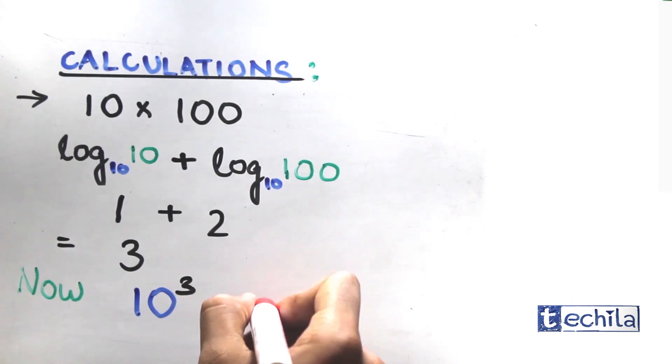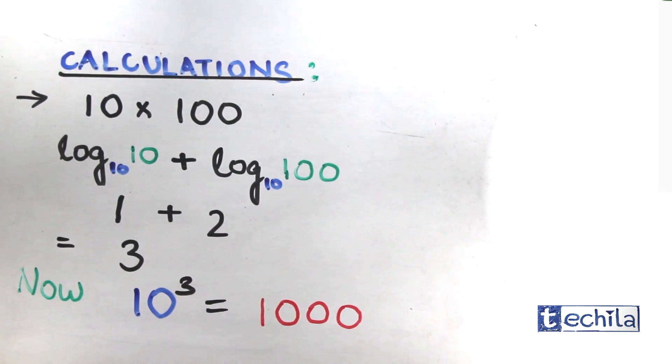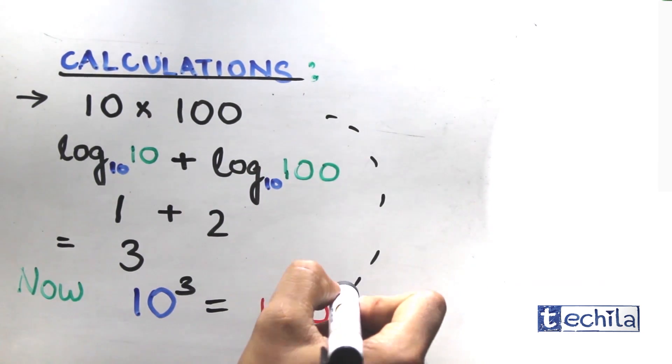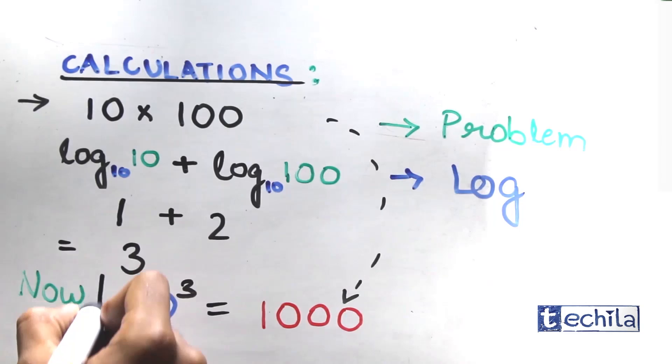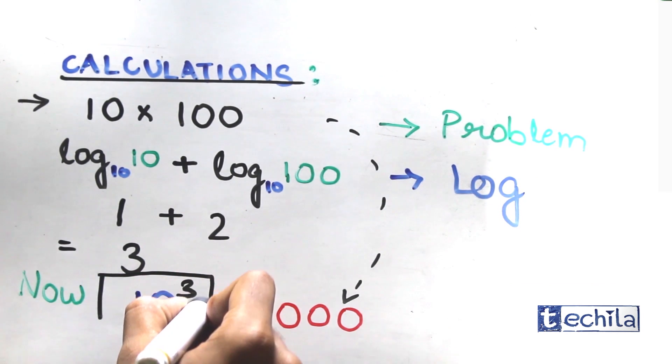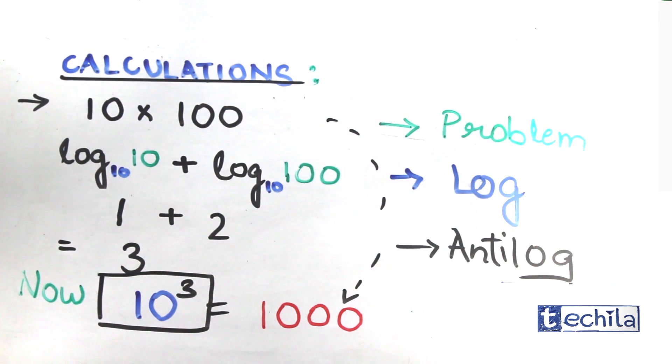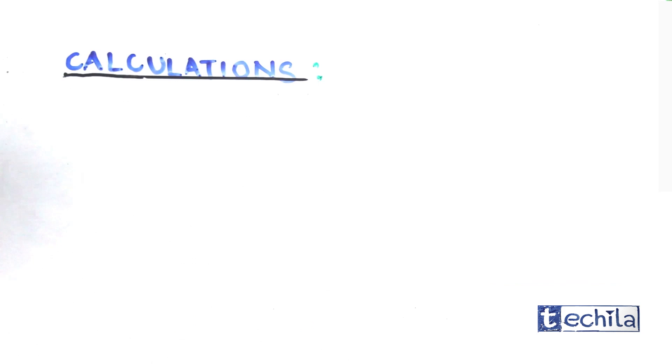Therefore, calculations using logarithm involves analyzing the problem, taking logarithm with an appropriate base, and finally raising the base to the number we get after simplification, which means taking anti-log. Now let's take another example: 12.75 multiplied by 6.2.